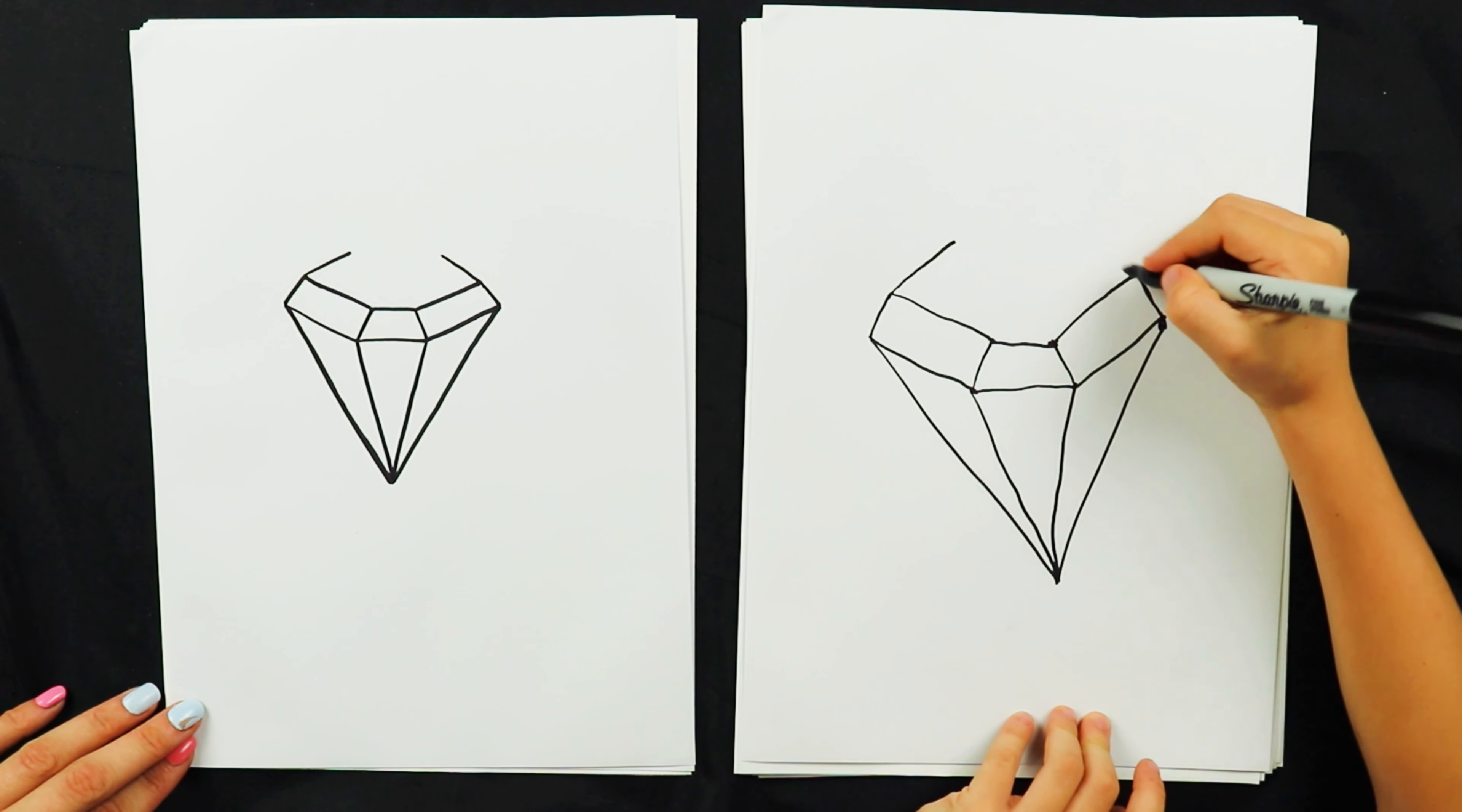And then we're going to join those two lines together straight across. Straight across. And that's our basic shape of a diamond. So our diamond's done.